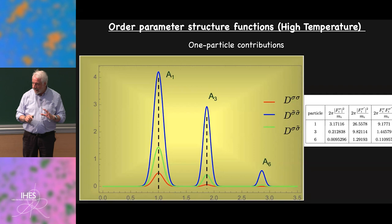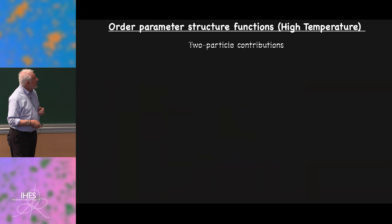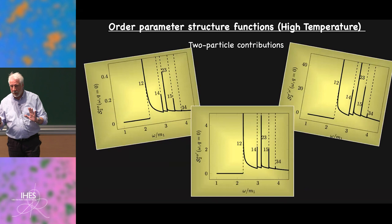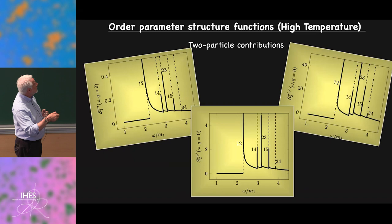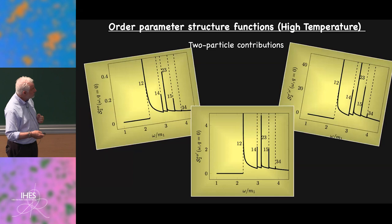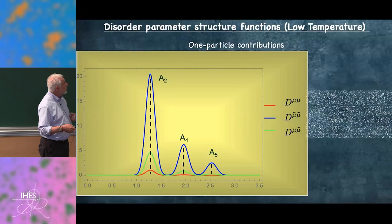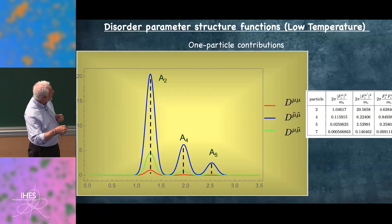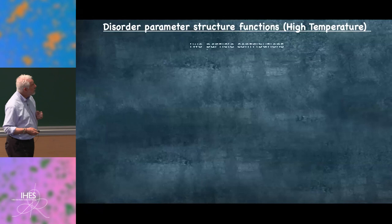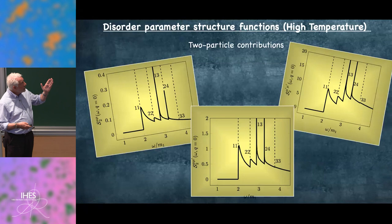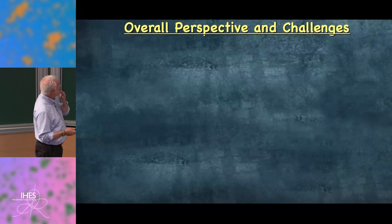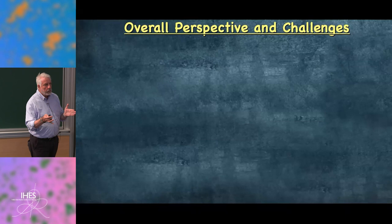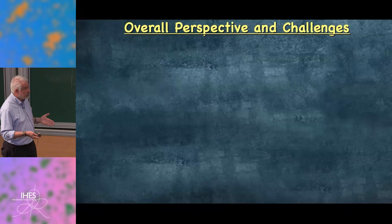The low-temperature computation gives exact data for all resonances — forget about the broadening, the delta function positions are exact. Two-particle contributions give a very specific curve. This is the challenge for experimentalists: I have all the data to compare with, and if they are able to realize this class of universality, they should tell me whether I was right or wrong.